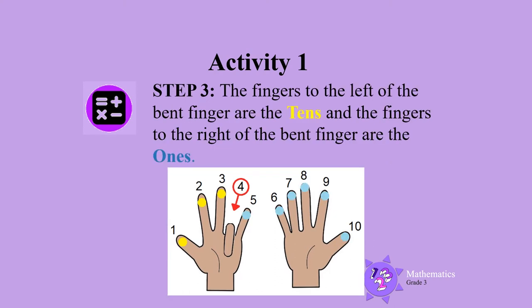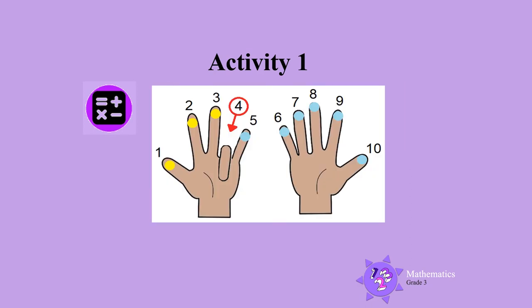Step 3: The fingers to the left of the bent finger are the tens, and the fingers to the right of the bent finger are the ones. In this example, there are 3 fingers to the left of the bent finger. These 3 fingers are marked yellow, so there are 3 tens.